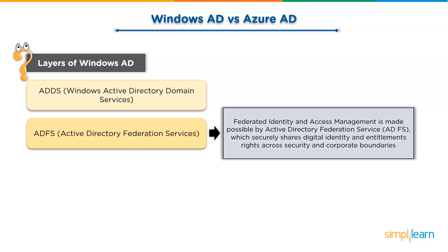Second is ADFS, Active Directory Federation Services. Federated identity and access management is made possible by Active Directory Federation Services, which securely shares digital identity and entitlements right across security and corporate boundaries, to provide customers, partners and suppliers with a streamlined user experience while accessing an organization's web-based applications. ADFS extends the ability to employ single sign-on capability accessible within a single security or enterprise boundary to internet-facing apps.